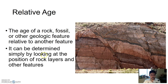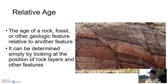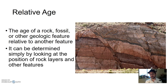In rocks, relative age can be determined simply by looking at the position of rock layers and other features. Looking at these layers of rock and knowing a little about how they form, you can say this is older than that, this happened first, this happened second. You don't need fancy equipment for an absolute age, or a geologic timescale to place something in a time period. You can just look at an outcrop and say this is older than that — it's a very powerful tool. You're speaking in generalities, but it's very powerful.